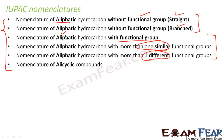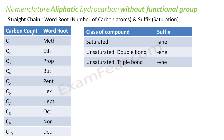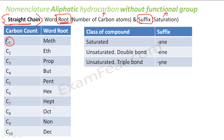The first thing we have to find is whether the compound is straight chain or branched, whether it has a functional group or not, whether it has more than one functional group — depending on that, we apply different rules. The first rule is for aliphatic hydrocarbons without a functional group, specifically for a straight chain without any branch. For this you just need to understand word root and suffix.